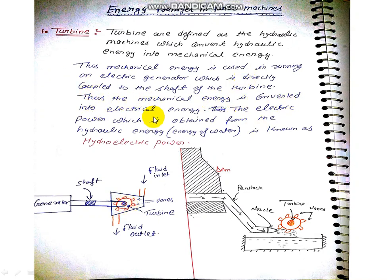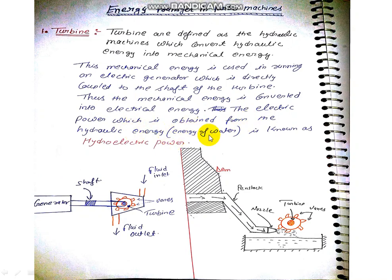The generator is directly connected to the turbine, and thus the mechanical energy is converted into electrical energy. The electric power which is obtained from the hydraulic energy is known as hydroelectric power. Before this, the water is stable and flowing — that is hydraulic energy. So hydraulic energy converts into mechanical energy, and this mechanical energy converts into electrical energy with the help of a generator.